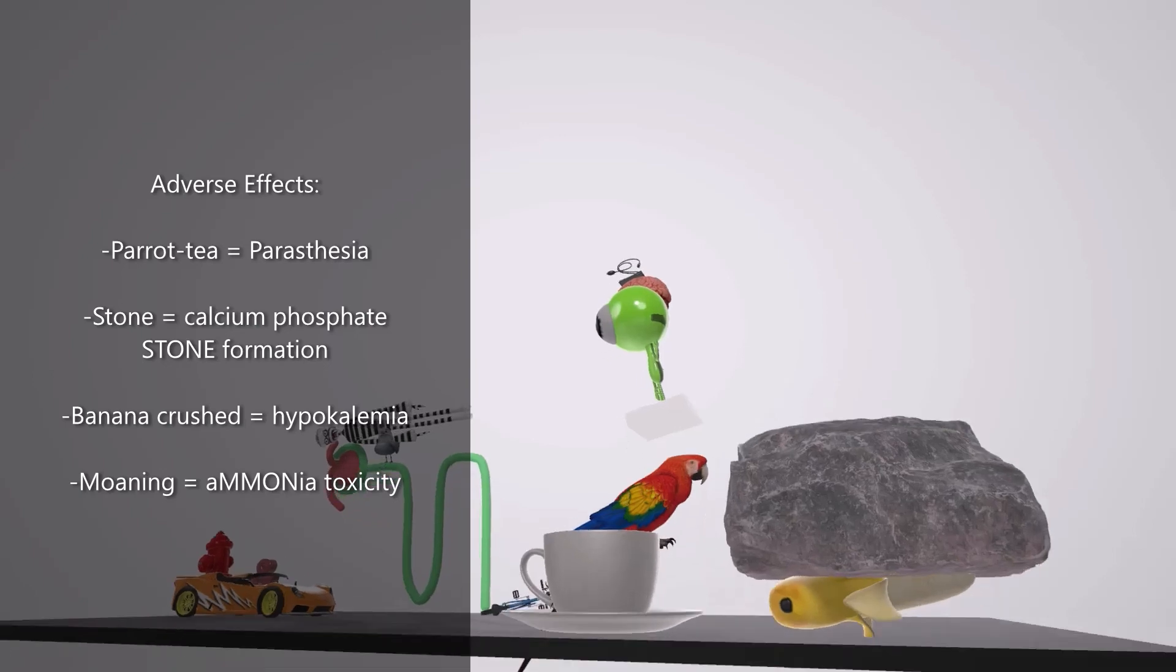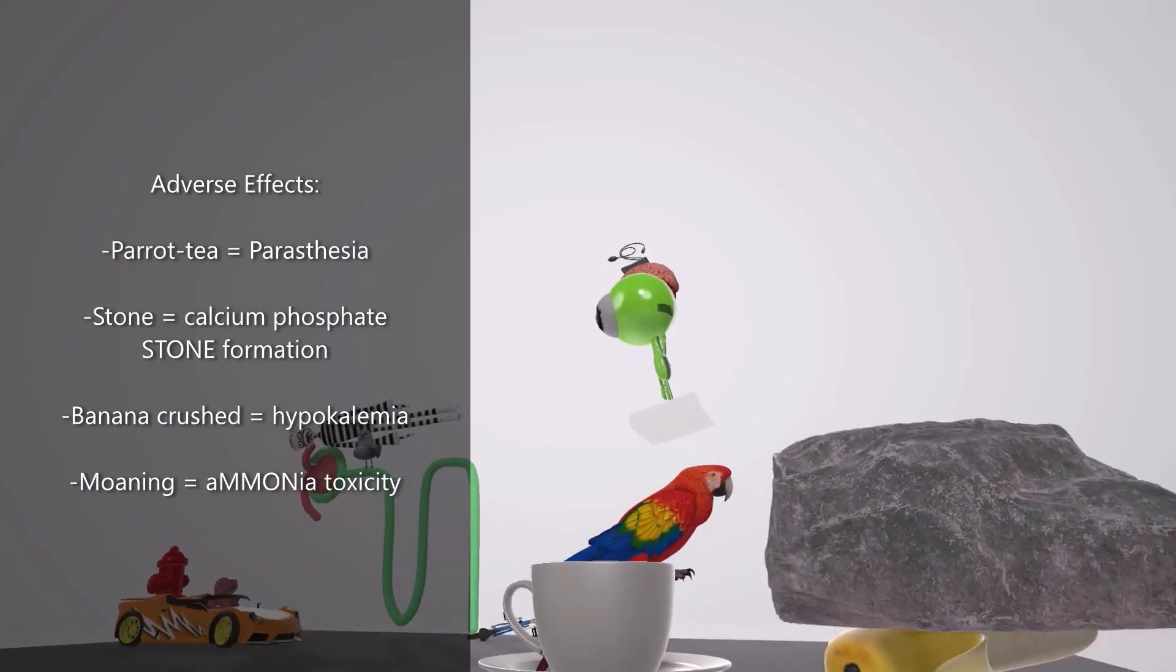Because of all this, the parrot here is moaning, which helps us remember ammonia toxicity. Therefore, carbonic anhydrase inhibitors are contraindicated in patients with cirrhosis.